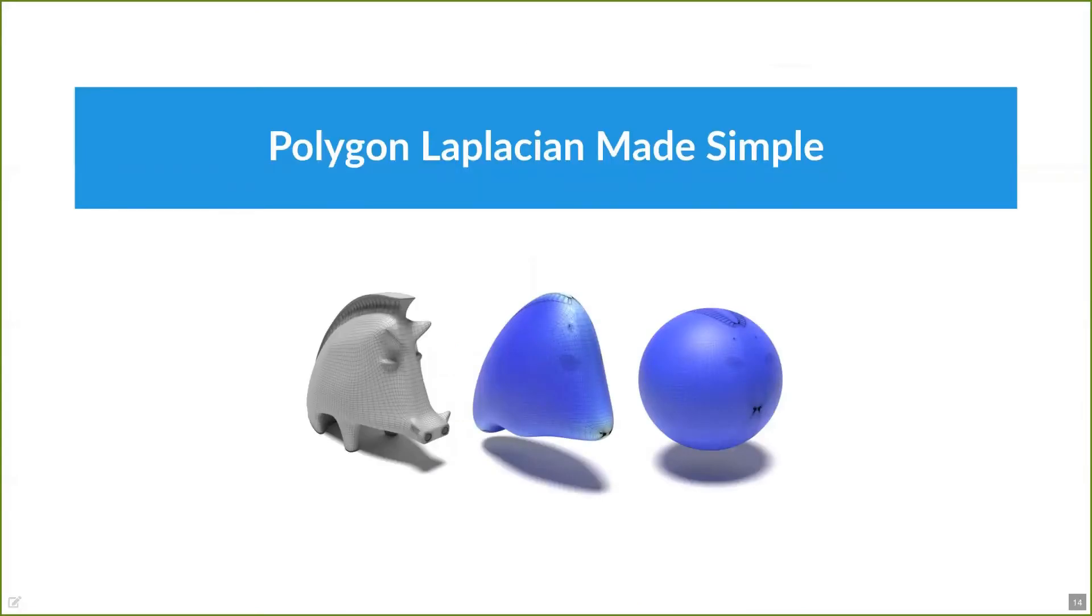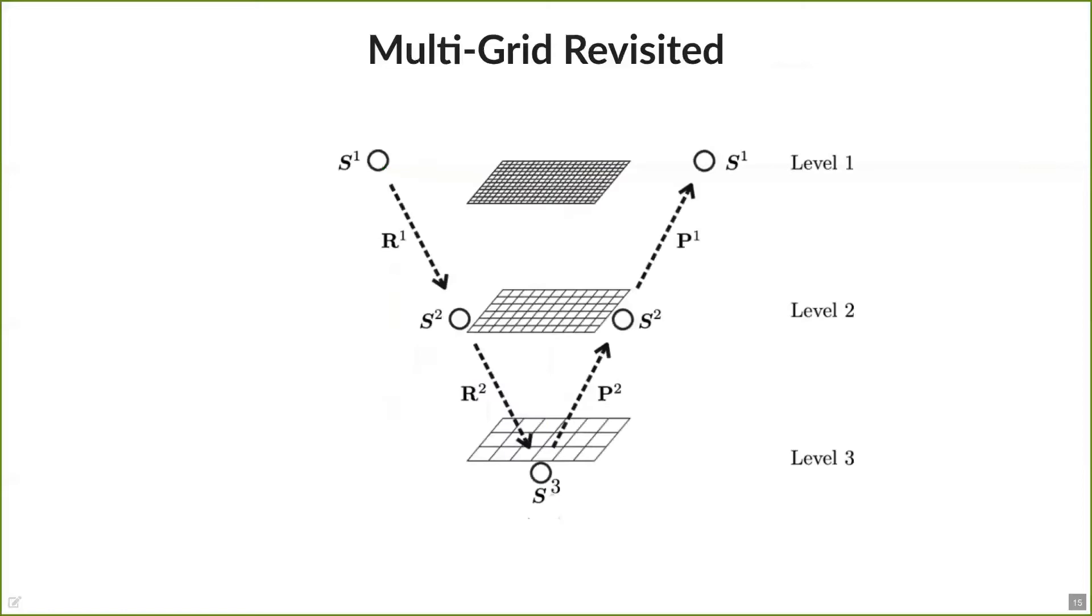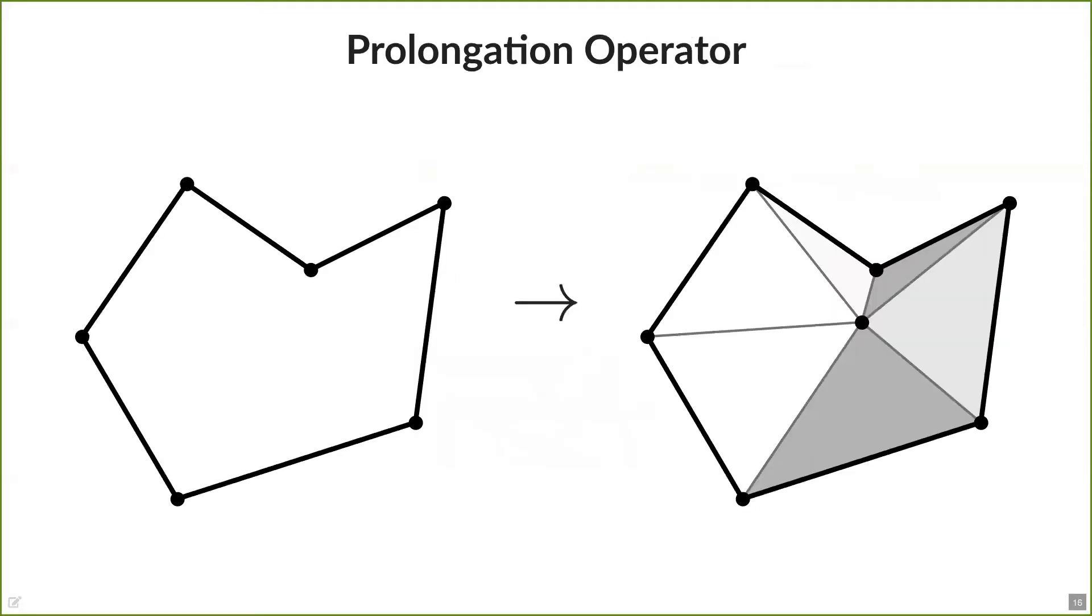So, how do we construct our new operator? To transfer information between the coarse polygon and the refined triangle mesh, we follow the so-called multigrid approach that uses a prolongation and restriction operator to transfer information between different resolution grids, with the restriction going from fine to coarse and the prolongation going from coarse to fine. So, the first step is to define a prolongation operator that virtually inserts the previously mentioned vertex within each polygon, to then span the implicit triangle fan, while keeping the original vertices in place.